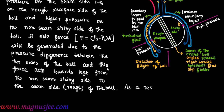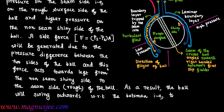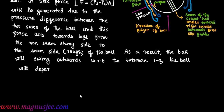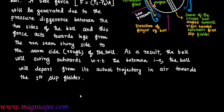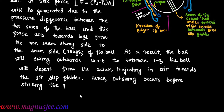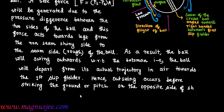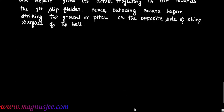That means the ball will swing in the opposite side of the shiny side. As a result, the ball will swing outwards with respect to the right-handed batsman — the ball departs from its actual trajectory in mid-air towards the first slip fielder, opposite to the shiny side or non-seam side of the cricket ball. Hence, outswing occurs before striking the ground on the opposite side of the shiny surface of the ball.